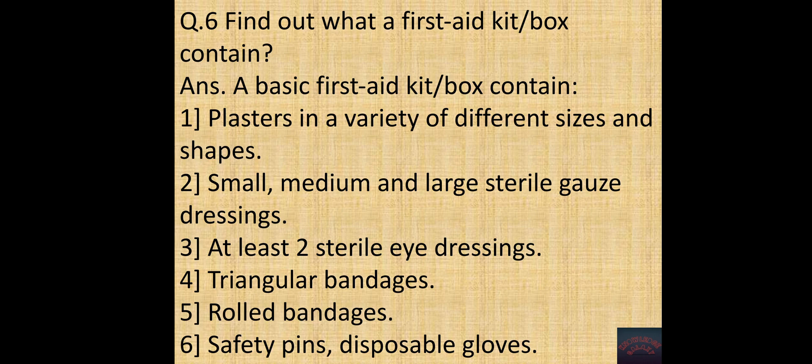Question number six. Find out what a first aid kit or box contains. Answer. A basic first aid kit contains: first, plasters in a variety of different sizes and shapes; second, small, medium and large sterile gauze dressings; third, at least two sterile eye dressings; fourth, triangular bandages; fifth, rolled bandages; sixth, safety pins and disposable gloves.